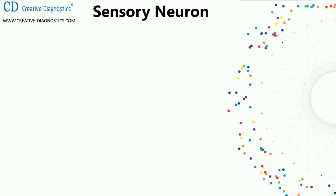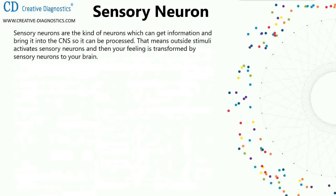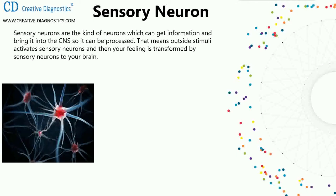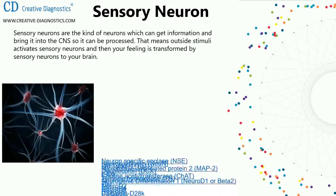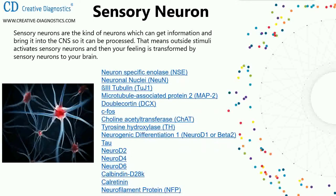First: sensory neurons. Sensory neurons are the kind of neurons which can get information and bring it into the CNS so it can be processed. That means outside stimuli activate sensory neurons, and then your feeling is transformed by sensory neurons to your brain. Sensory neuron markers include neuron-specific enolase, neuronal nuclei (NeuN), beta-III-tubulin, microtubule-associated protein 2 (MAP2), doublecortin, and c-Fos.